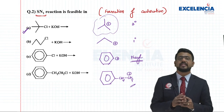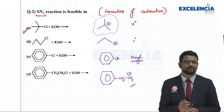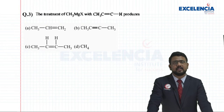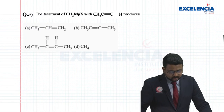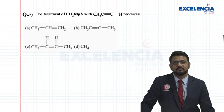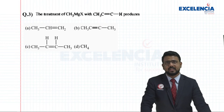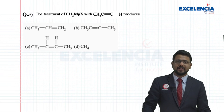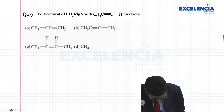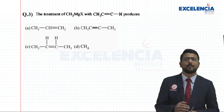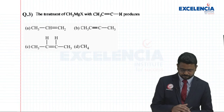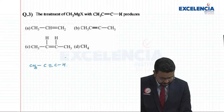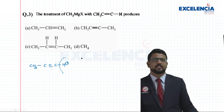In such questions, please look at the stability of the intermediates formed. Moving to the next question: the treatment of CH3MgX (Grignard reagent) with CH3C≡CH (propyne). The product options are propyne, but-2-yne, but-2-ene, and methane. Understand that propyne has a terminal triple bond, and this particular hydrogen attached to that terminal carbon is an acidic hydrogen.